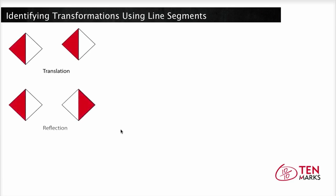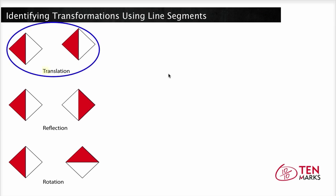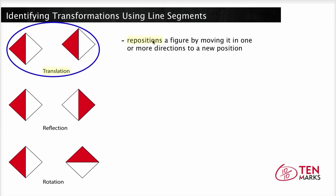Today you will learn about three major types of transformations: the translation, reflection, and rotation. A translation is a transformation that repositions a figure by moving it one or more directions to a new position. You can think of a translation as sliding a figure to a new place without turning or flipping it. The shape and size remain the same, and no flipping or turning means the orientation stays the same after a translation.